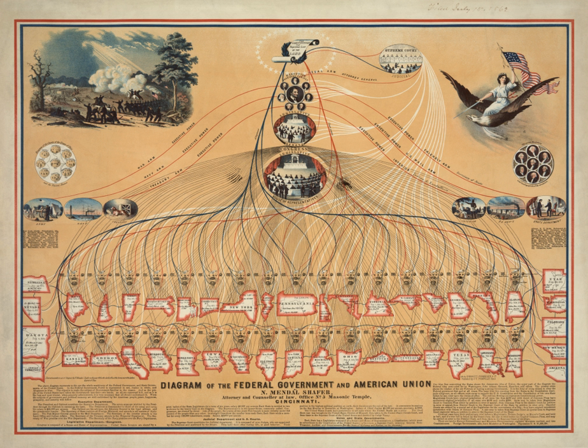Congress's oversight function takes many forms: committee inquiries and hearings; formal consultations with and reports from the President; Senate advice and consent for presidential nominations and for treaties; House impeachment proceedings and subsequent Senate trials; House and Senate proceedings under the 25th Amendment in the event that the President becomes disabled or the office of the Vice President falls vacant; and informal meetings between legislators and executive officials. Each state is allocated a number of seats in Congress based on its representation, and each state is allocated two senators regardless of its population. As of January 2010, the District of Columbia elects a non-voting representative to the House of Representatives, along with American Samoa, the U.S. Virgin Islands, Guam, Puerto Rico, and the Northern Mariana Islands.